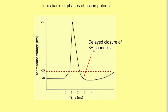These potassium channels are slow to open and also slow to close — there is a delayed closure of potassium channels. So more potassium goes out of the cell, and since this positive ion is leaving the cell, the potential actually becomes more negative than the resting membrane potential. This phase is known as hyperpolarization. So hyperpolarization occurs because of the delayed closure of the potassium channels, leading to more efflux of potassium ions out of the cell.